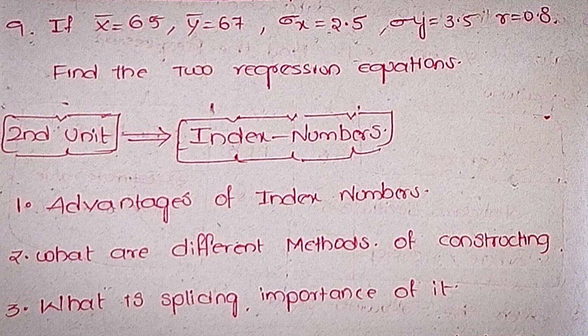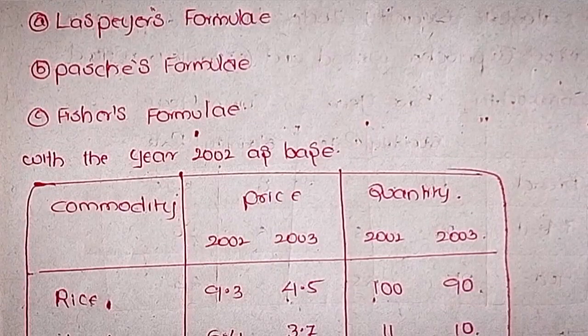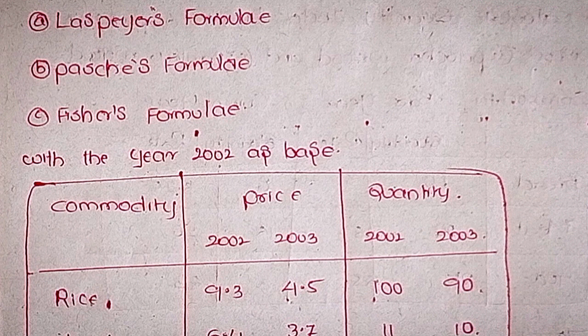Unit 2: Index Numbers. Firstly, advantages of index numbers. Secondly, what are the different methods of constructing index numbers? Thirdly, what is splicing and its importance? Fourthly, what are consumer price index numbers? Fifthly, calculate price index numbers for the year 2003 by Laspeyre's formula, Paasche's formula, and Fisher's formula.